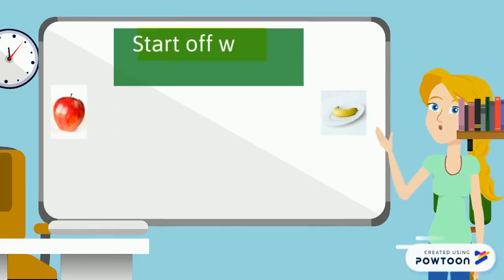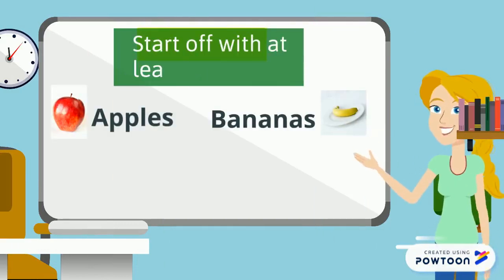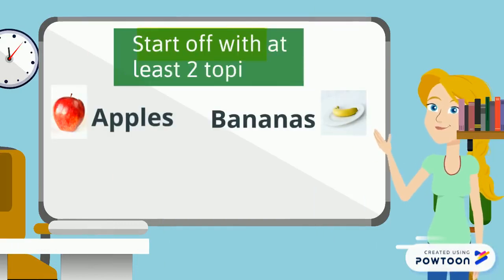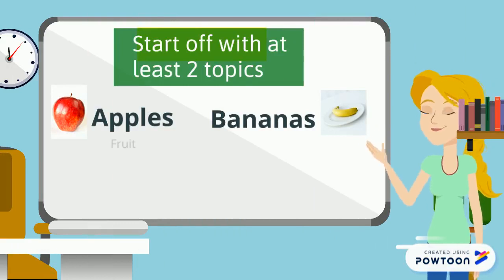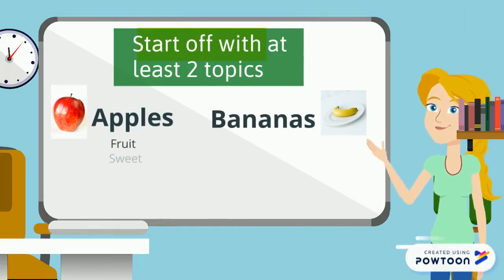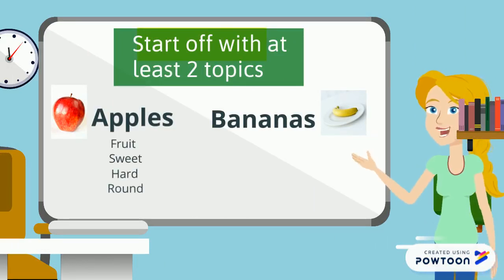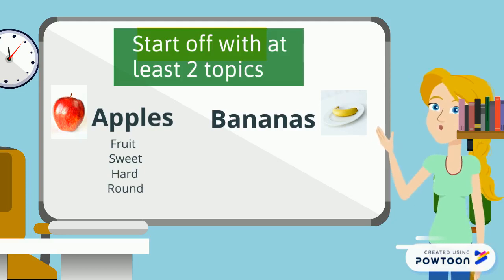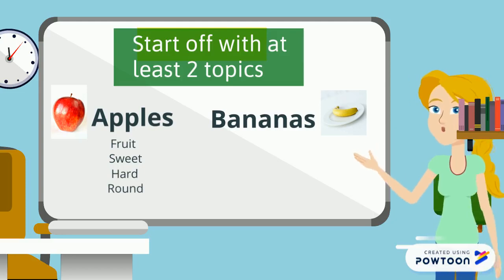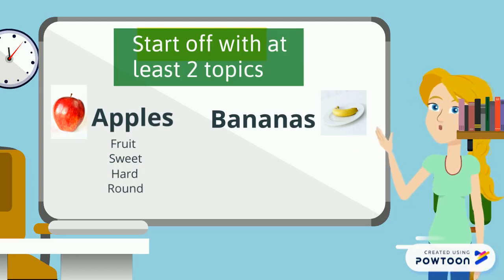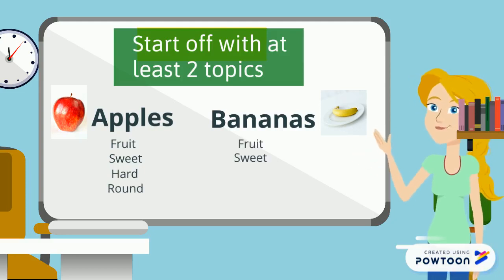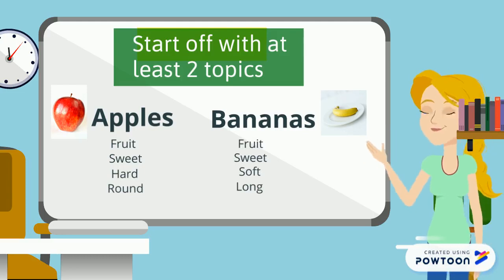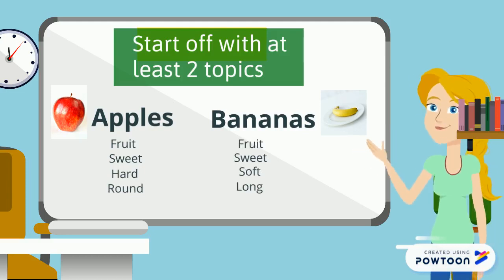To start off you want to have at least two topics. For this example I'm using apples and bananas. When I think about apples I know that they are fruit, they are sweet, they are hard, they are round. When I think about bananas I know that they are also fruit and sweet, but they are soft and they are long.